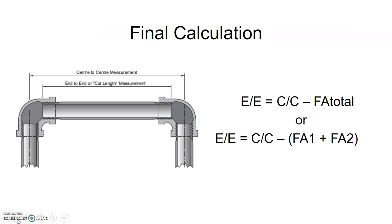So our final calculation will be, in order to find our end-to-end, we need to know the center to center, and then we subtract the FA's. So in this case, we can subtract the FA total, which just means we've added the two FA's together for either side, and now we're going to subtract it from the center to center. Or we could write the formula: end-to-end equals center to center minus, in brackets, FA1 plus FA2, and we're going to subtract that all off of the center to center dimension. And this is how we find end-to-end, knowing our center to center.